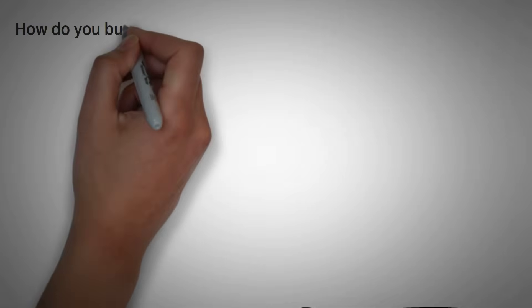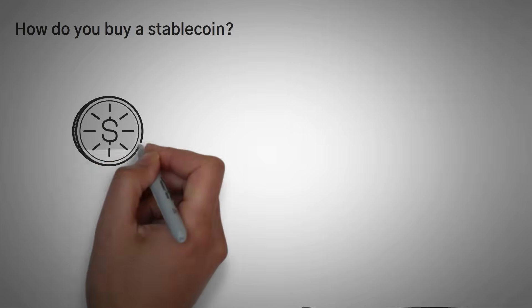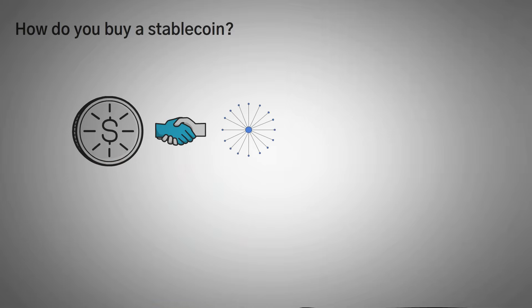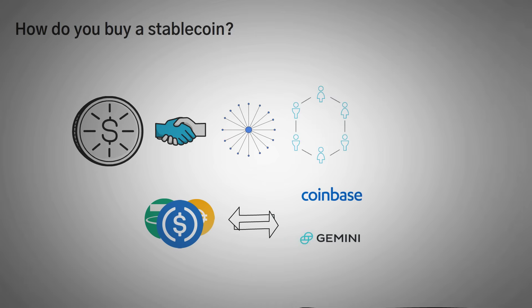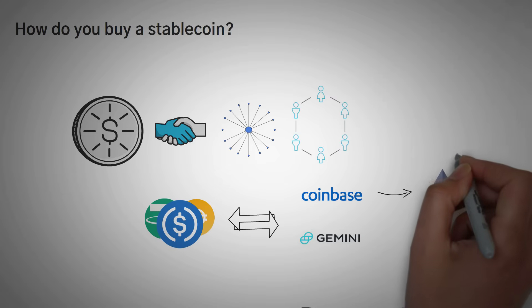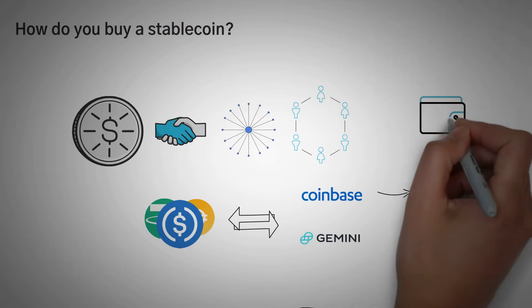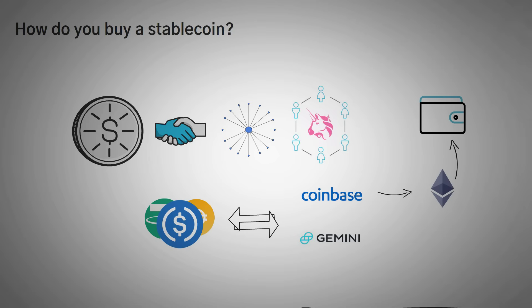Moving on though, how do you buy a stablecoin? In short, stablecoins are bought and sold on exchanges, both centralized and decentralized. It's very easy to buy Tether or DAI or USDC on a centralized exchange like Coinbase or Gemini. Another method is you could buy something like Ethereum on Coinbase, transfer it to your private wallet, and then use a decentralized exchange like Uniswap and trade that ETH into a stablecoin.